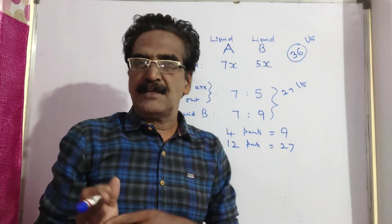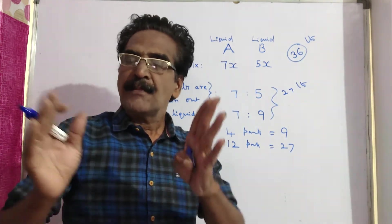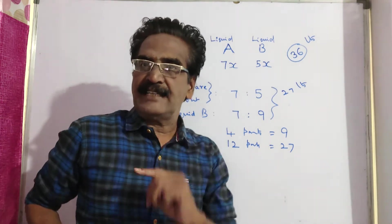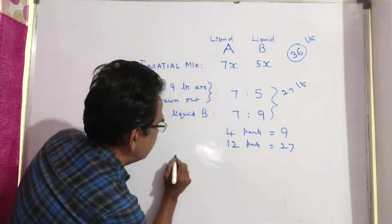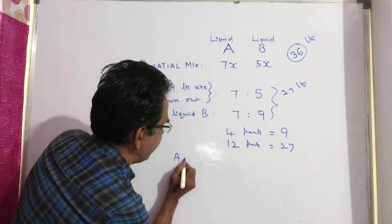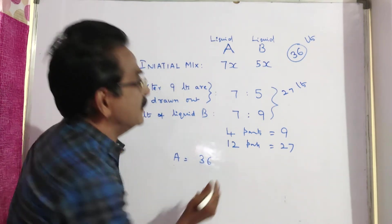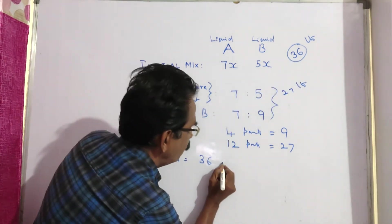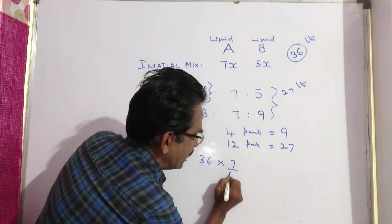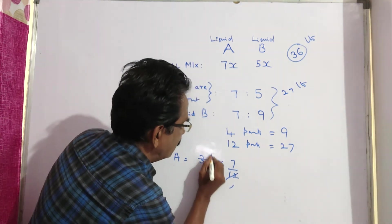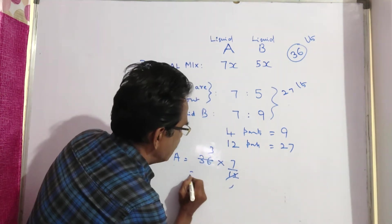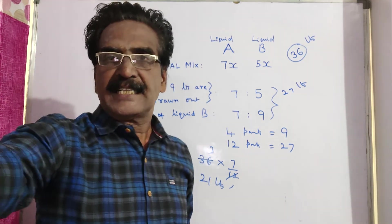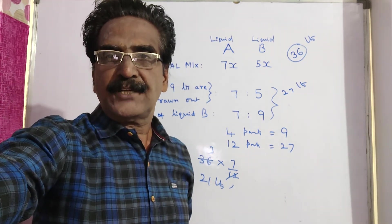The original quantity in the mixture was 36 liters. Now we want the quantity of liquid A. The 36 liters are in the ratio 7 is to 5, so quantity of liquid A equals 7 divided by 12, multiplied by 36, which gives 21 liters. Your answer is 21 liters. Thank you, have a nice day.